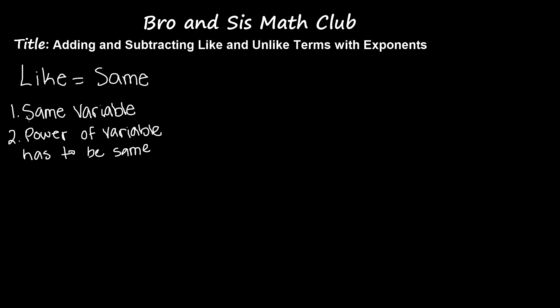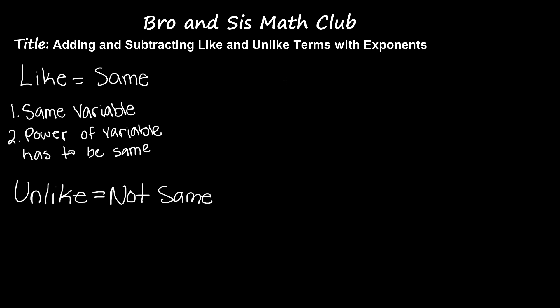Unlike terms are not the same — they do not possess those characteristics. Since the topic is adding and subtracting like and unlike terms, I just want to let you know that we cannot add or subtract unlike terms. We can only add and subtract like terms. So first, let's do a problem with only addition.